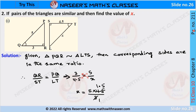Going to solve, try this page number 211. Two triangles are given similar and we have to find the value of x. We already know that triangle PQR is similar to triangle LDS. Then we can write, as the corresponding sides are in the same ratio, QR by ST is equal to PQ by RT.